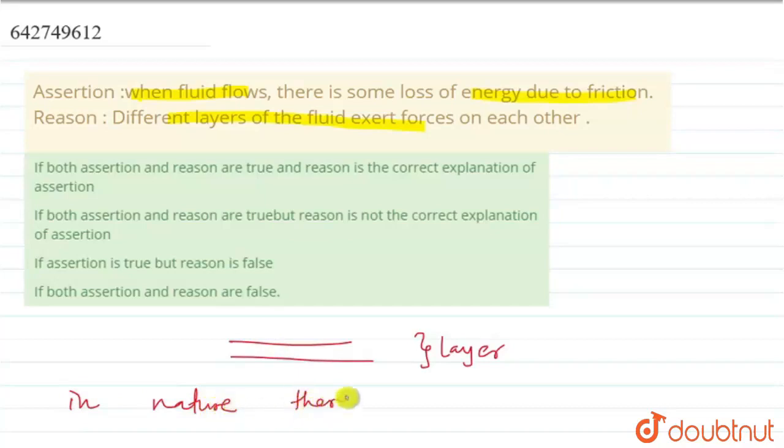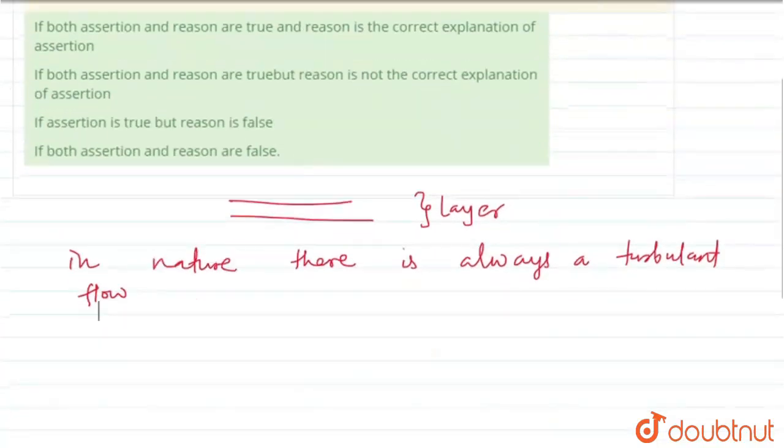There is always turbulent flow. There is no ideal case. When there is turbulent flow, there is friction, which implies there is relative motion between the layers.